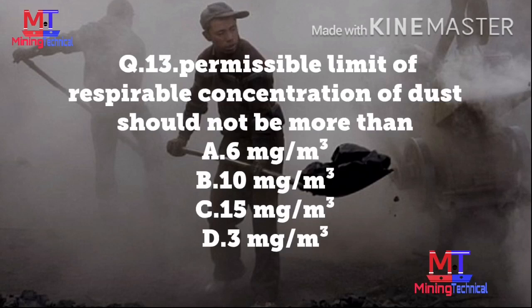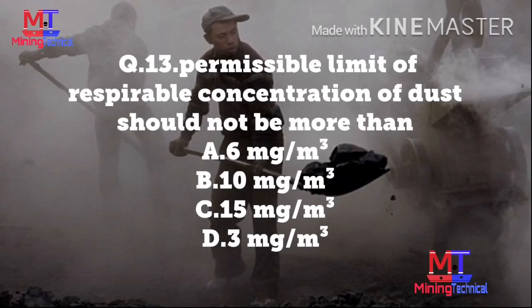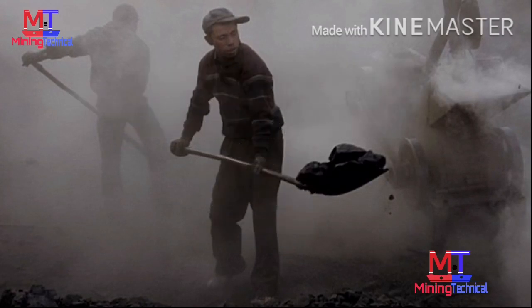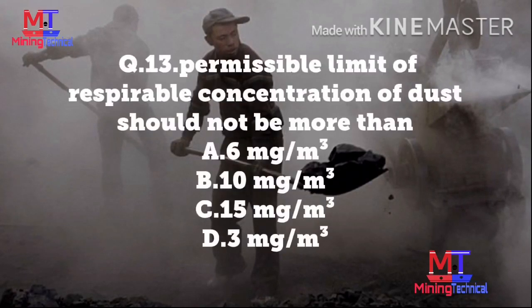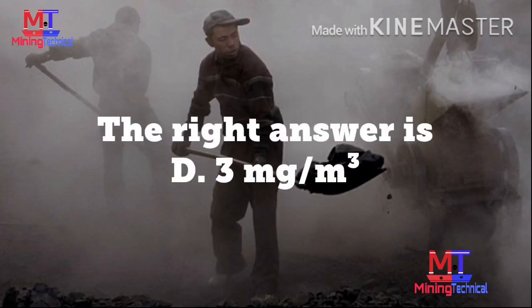Question number 13: Permissible limit of respirable concentration of dust should not be more than — Option A: 6 mg/m³, Option B: 10 mg/m³, Option C: 15 mg/m³, Option D: 3 mg/m³. Respirable dust ki matra kitna milligram se adhik nahi hona chahiye — the right answer is Option D: 3 milligram per cubic meter.